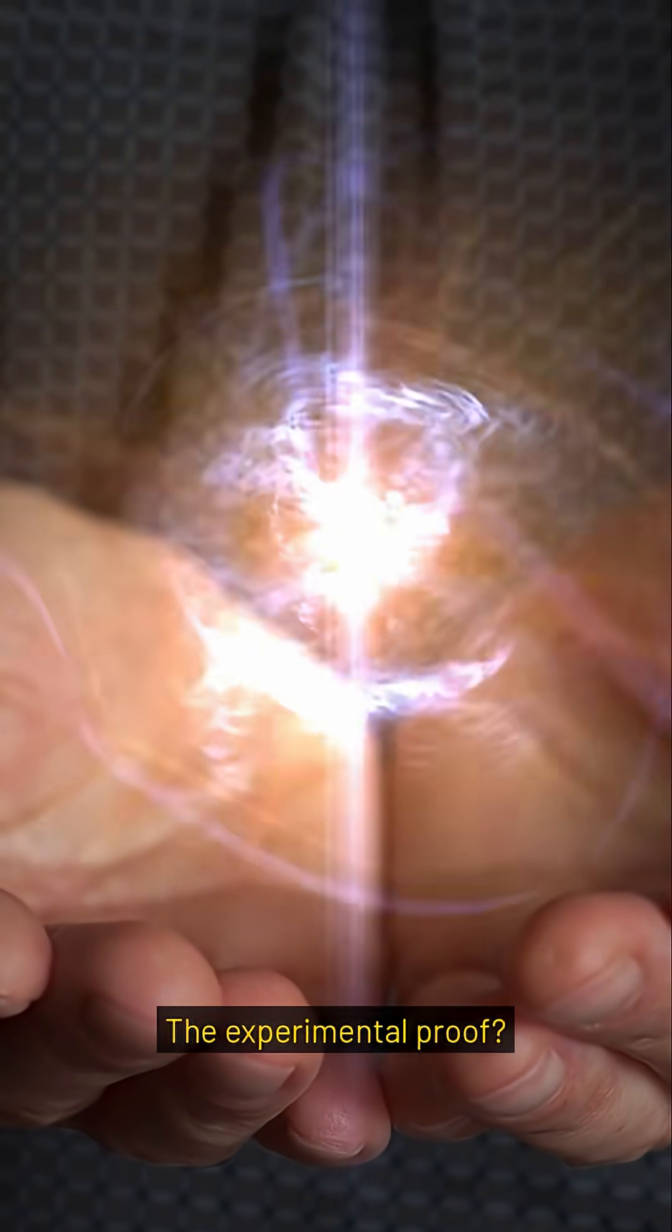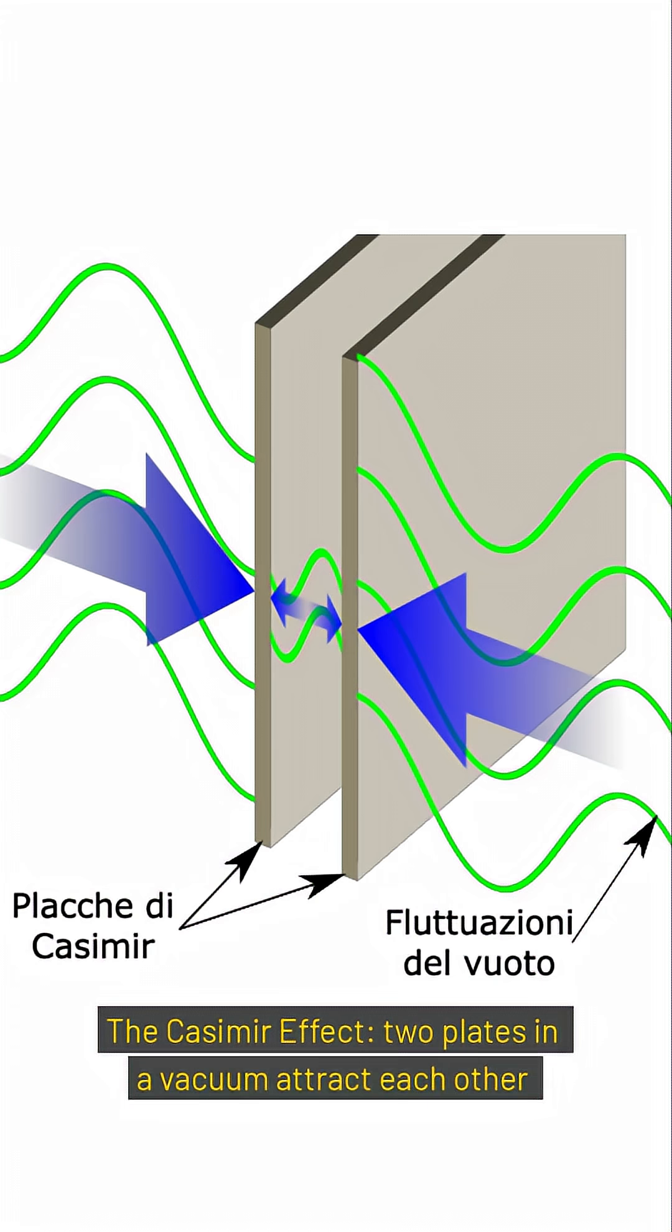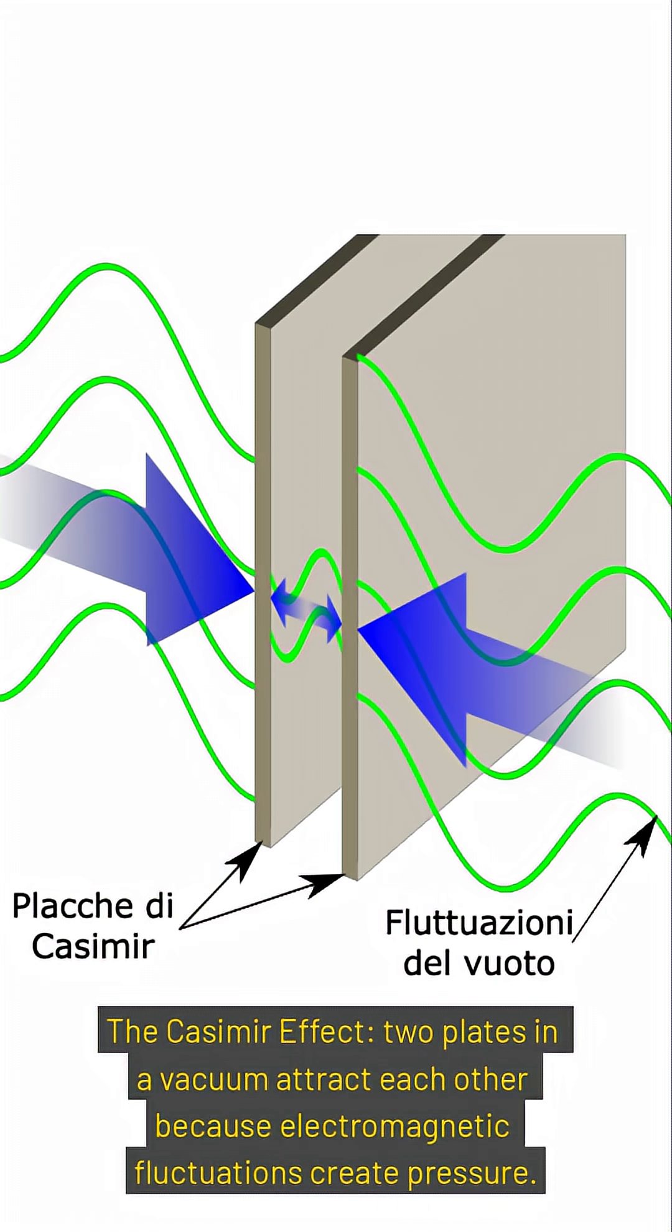The experimental proof? The Casimir effect. Two plates in a vacuum attract each other because electromagnetic fluctuations create pressure.